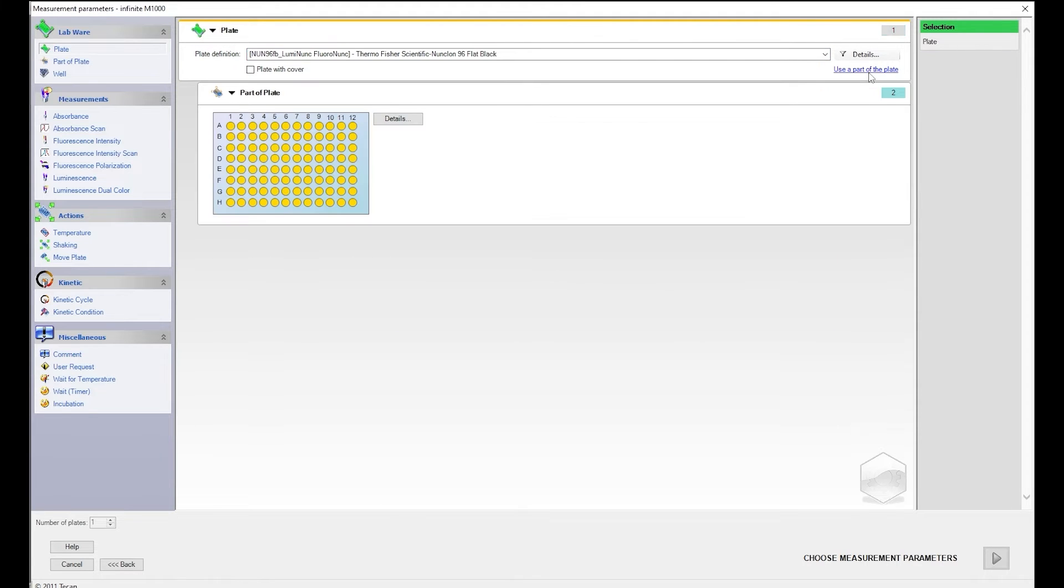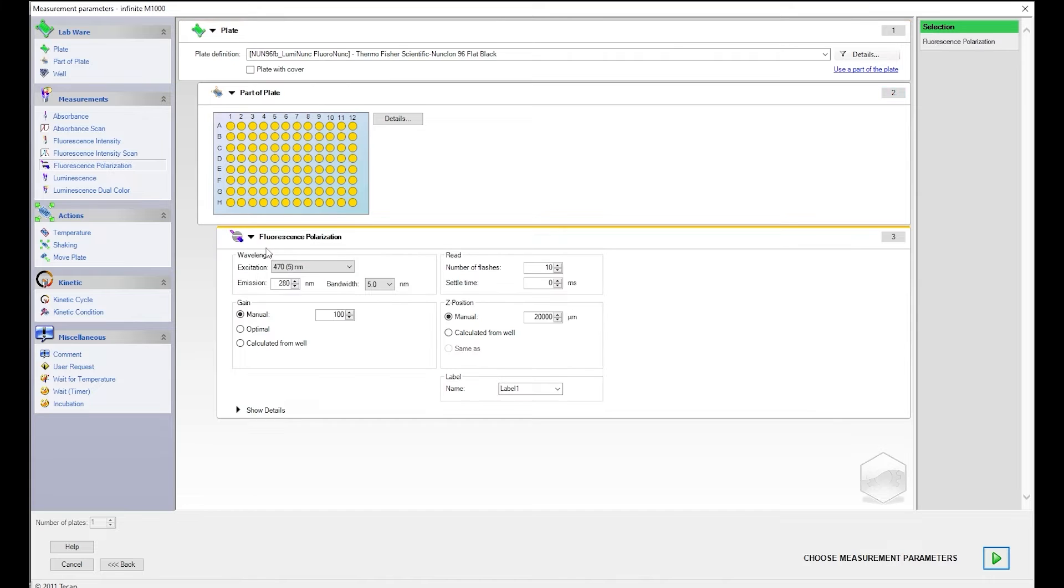From Measurements, drag and drop fluorescence polarization into the Method section nested below part of plate. Under Wavelength, select the desired excitation and emission. Set Bandwidth as needed. We recommend 10 nanometers.